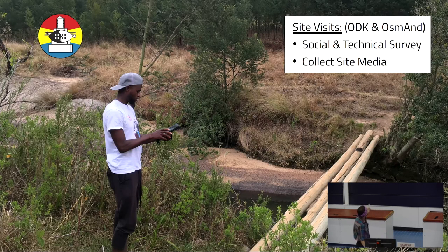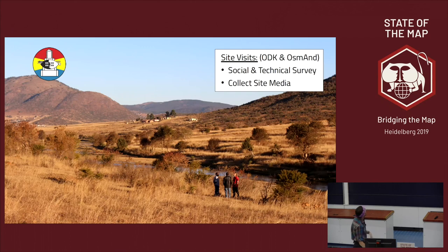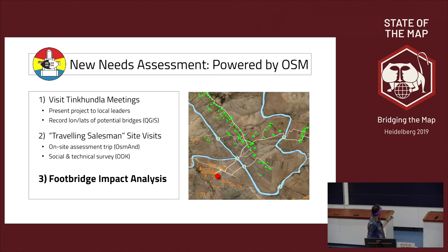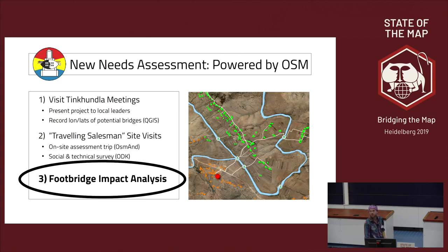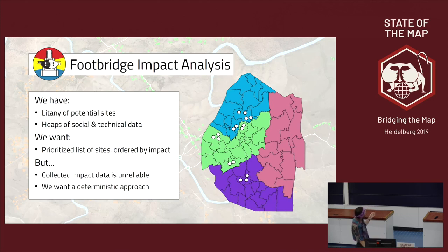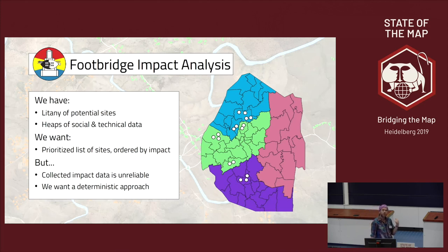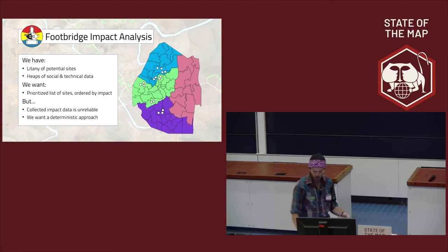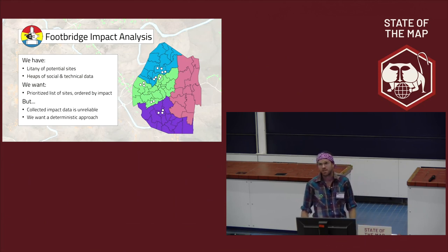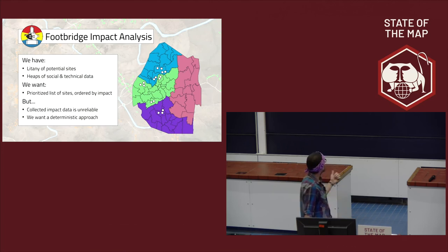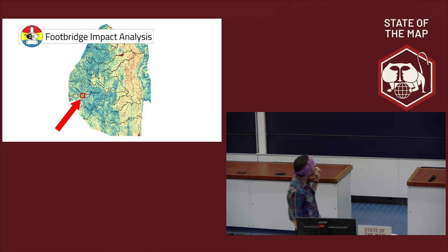We record all sorts of information at each site including a technical and social survey, and we collect a lot of site media for every place we visit. The third part is the footbridge impact analysis. After visiting all these bridge sites we have a ton of potential sites with technical and social data, and we want a prioritized list. Collected impact data is unreliable — if you ask people how many are impacted, they'll exaggerate because more impact means more likelihood we'll build there — so we want a deterministic approach.